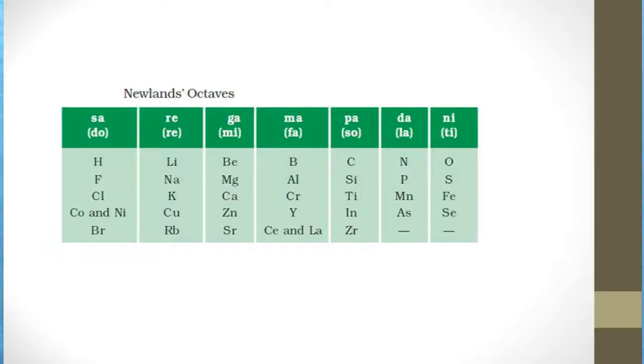The limitation of Döbereiner's triads led to the next concept of classification, discovered by Newlands. He first arranged all the elements in increasing order of atomic mass and found that the eighth element in that counting had similar properties to the first element. He named these groups octaves, borrowing from music, where every eighth note repeats. These groups of eight elements are called Newlands' octaves.